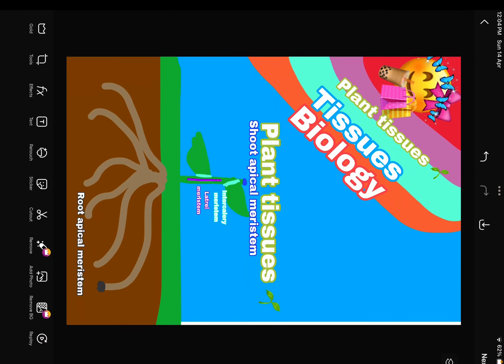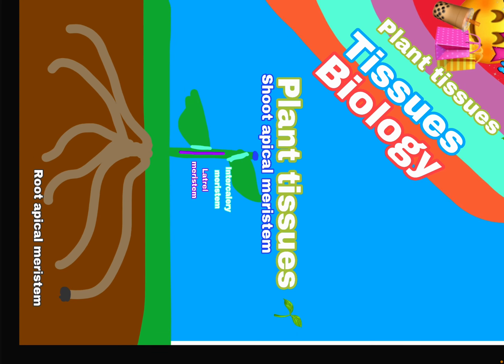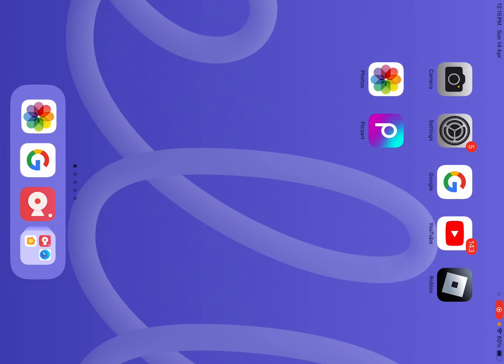Now let's see where these tissues are located. Shoot apical meristem tissue is located at the top of the plant. Intercalary meristem tissue is located at the internodes, as I said. Lateral meristem is located on the stem, as I said. Root apical meristem tissue is located at the root. India, bye!